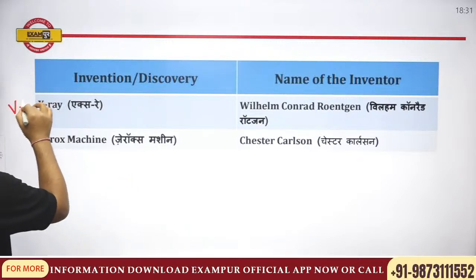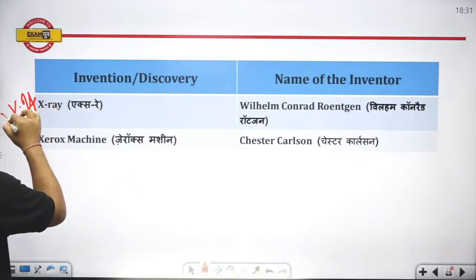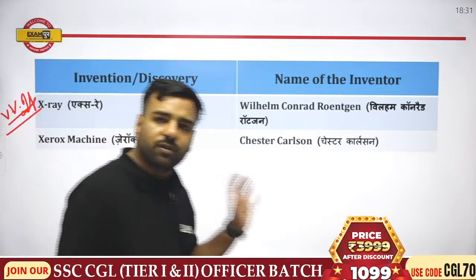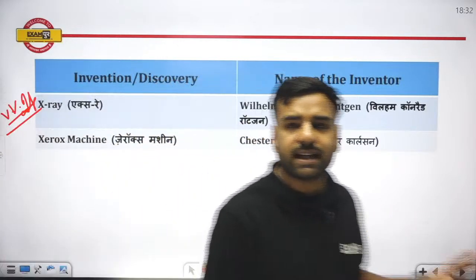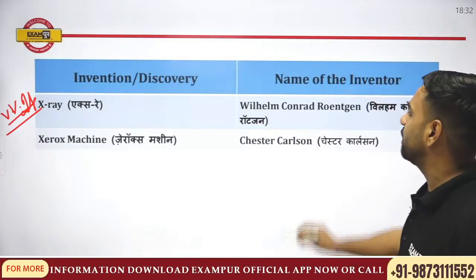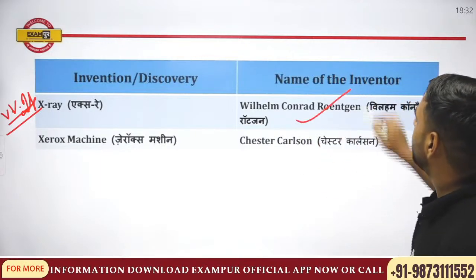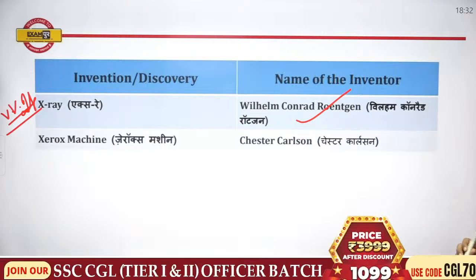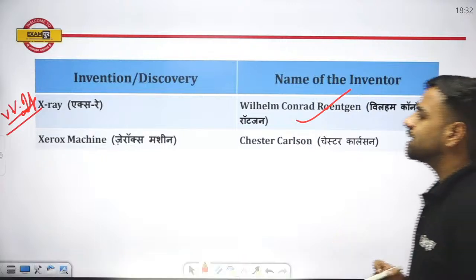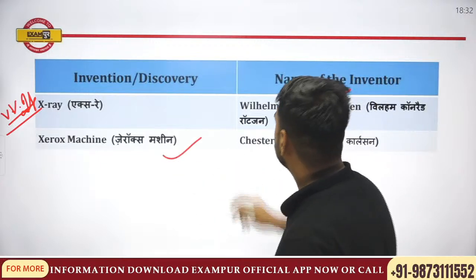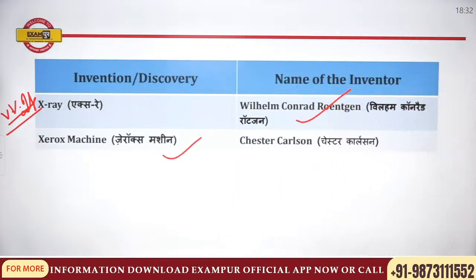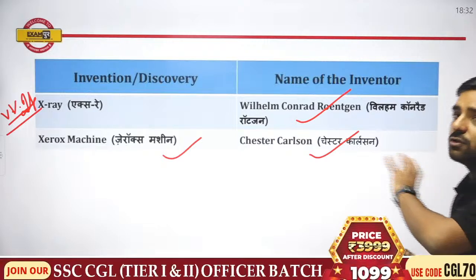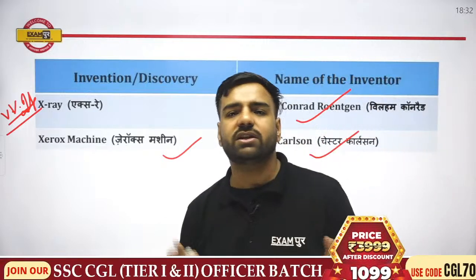X-ray is very important and asked many times in the examination. X-ray was discovered by Wilhelm Conrad Röntgen — please remember his name. Xerox machine was discovered by Chester Carlson. These were all the important inventions and discoveries.